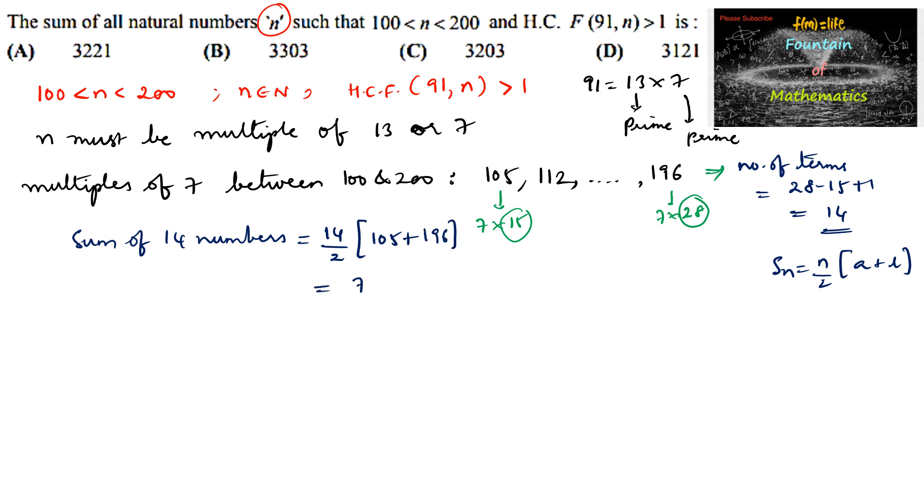Which is equal to 7 into, we can write here 196 plus 105. 196 plus 105 is 301. So 301 into 7, we'll be getting 2107.